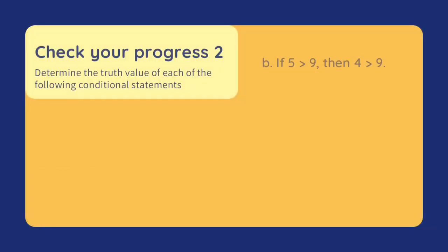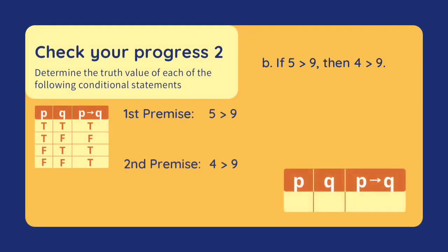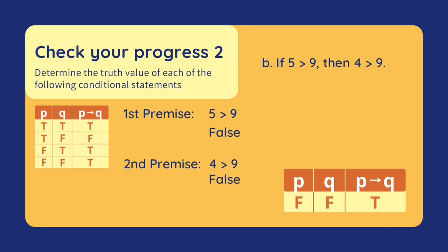Let's have another one. If 5 is greater than 9, then 4 is greater than 9. Our first premise is '5 is greater than 9.' This is false because 5 is less than 9. Our second premise is '4 is greater than 9.' This is also false because 4 is less than 9. Since both premises are false, our conditional is true.